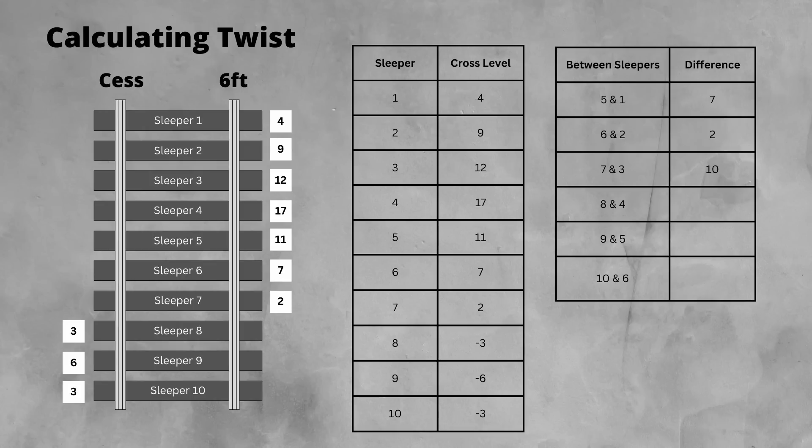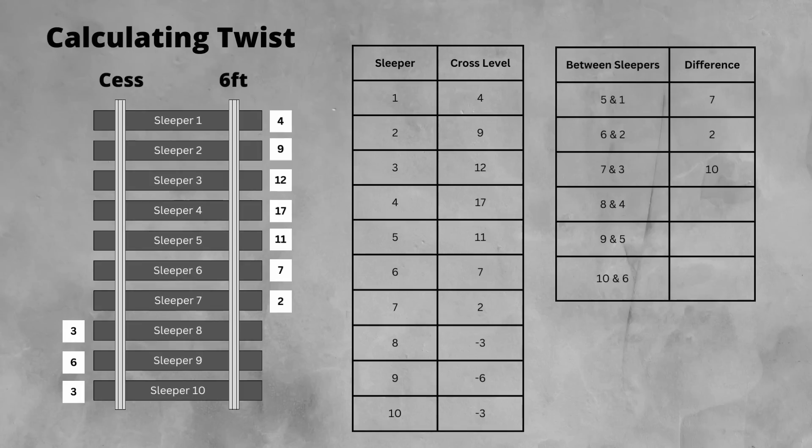This takes into account the fact that the train will rotate from one side to the other as it passes over the dip firstly on the 6 foot rail, and then the dip on the cess rail. This gives us a difference of 20. We do the same for the last two, and as before, we work out that this is still a 1 in 150 value twist.